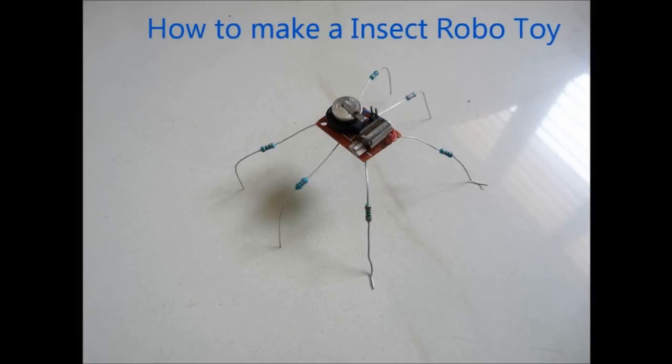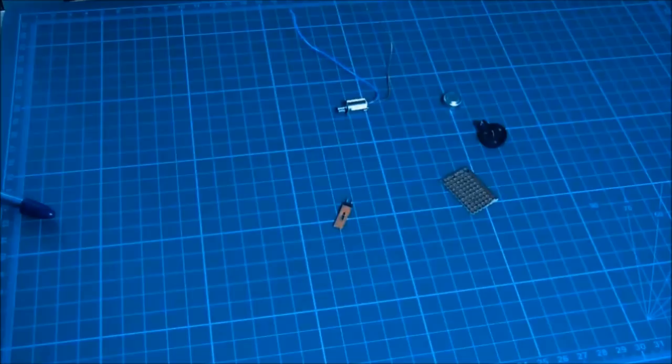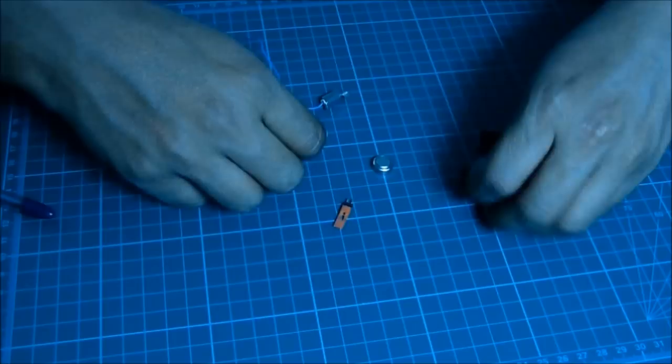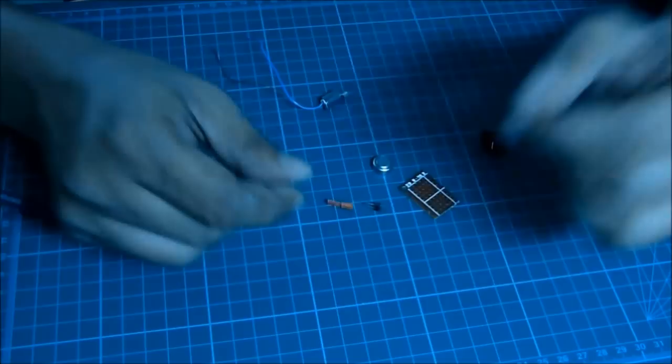Hello there, this video is about how to make a very simple insect robot. You need a mobile phone's vibration motor, one LR44 battery holder, one LR44 1.5 volt battery, one general purpose PCB, and these pins that is a jumper pin.